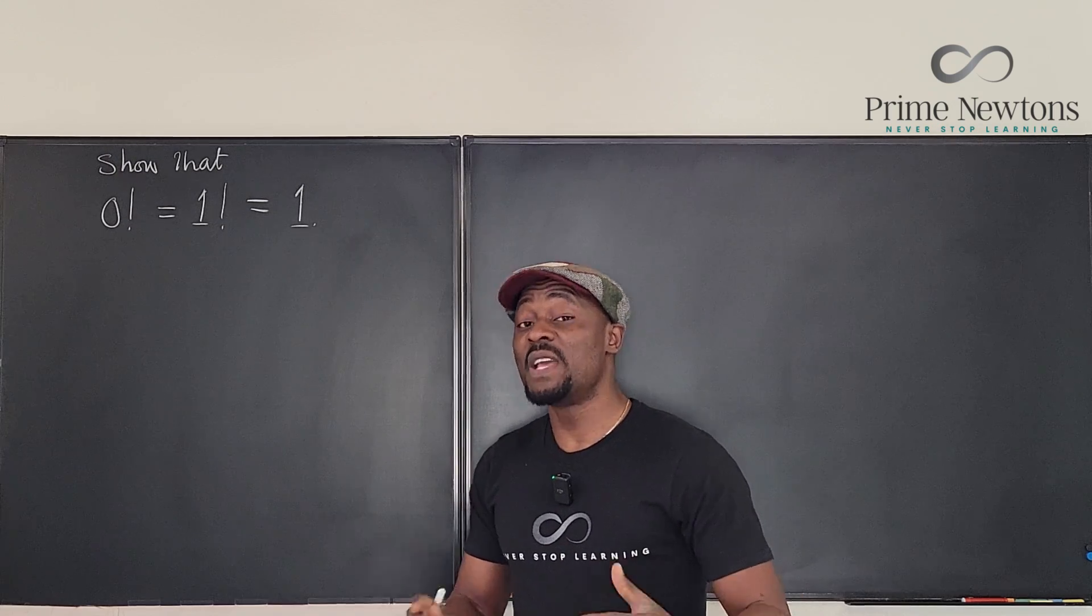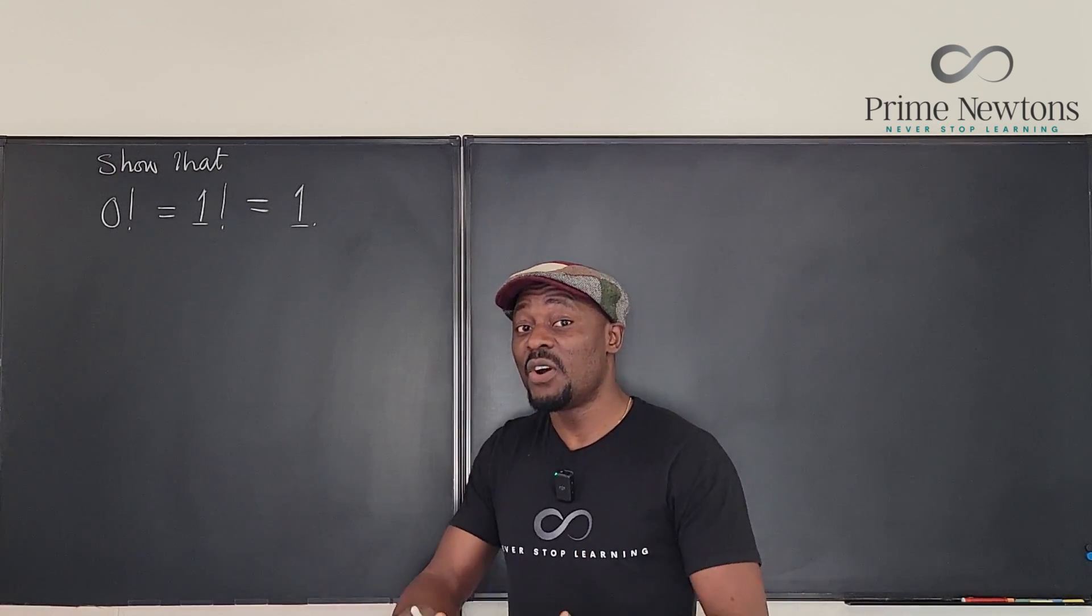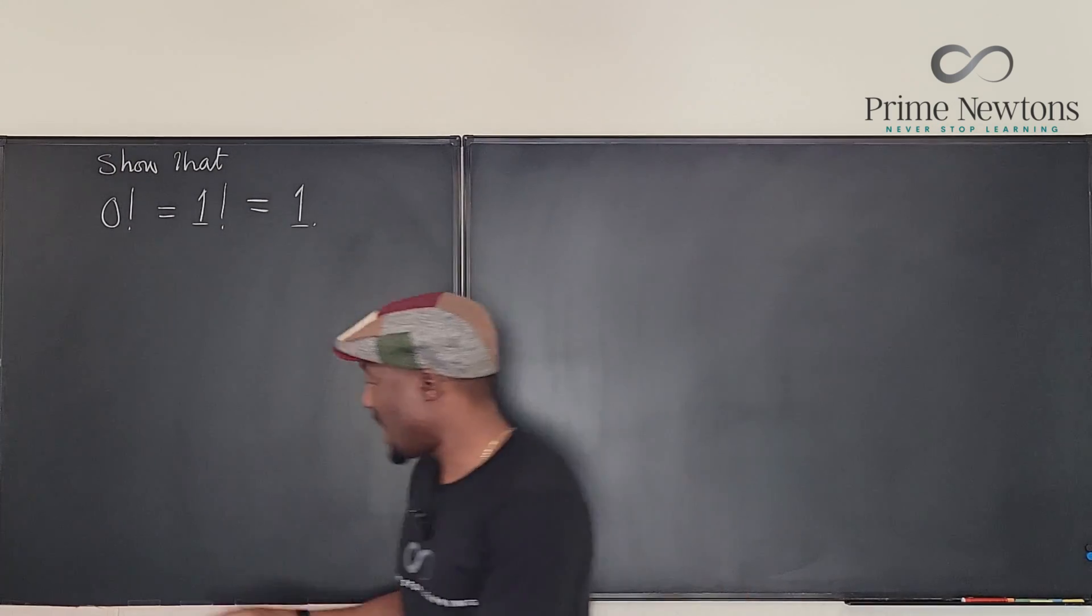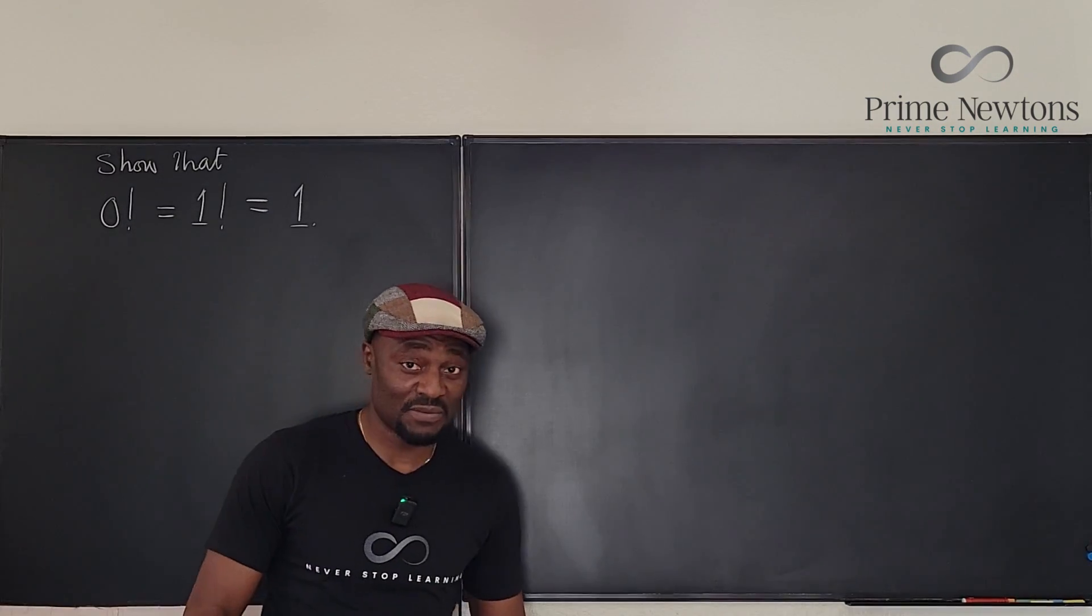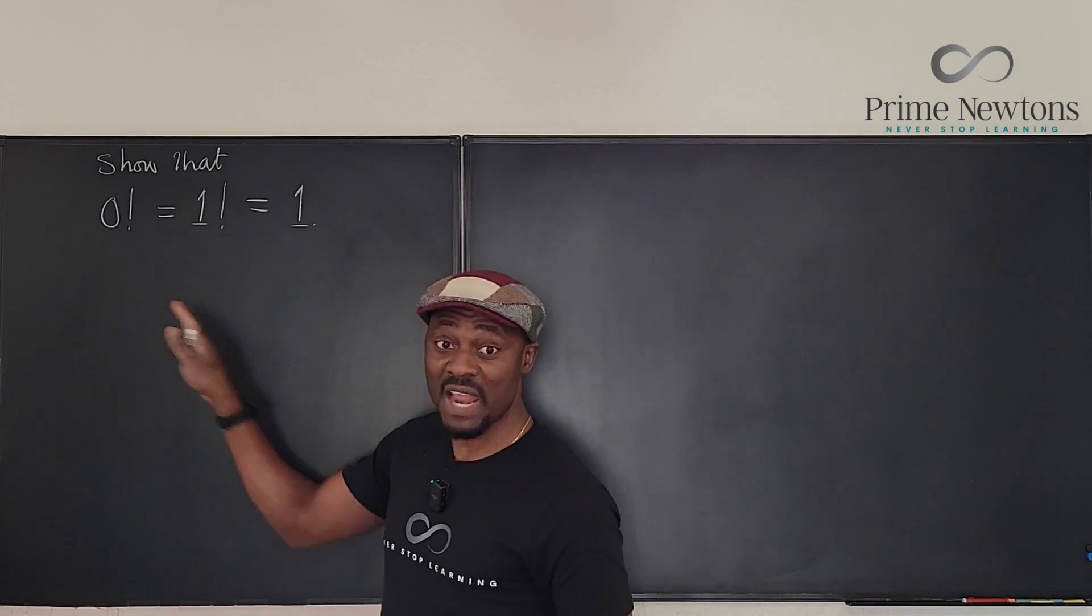Now the first thing we're going to do is write the definition of the factorial. Any factorial which is defined for natural numbers. Now I'm not using the gamma function. I just want to go straight from natural numbers.